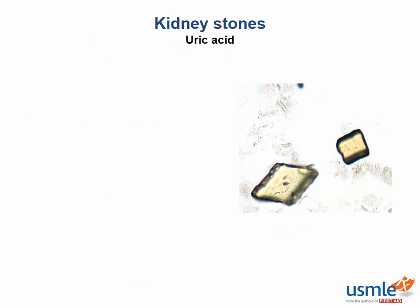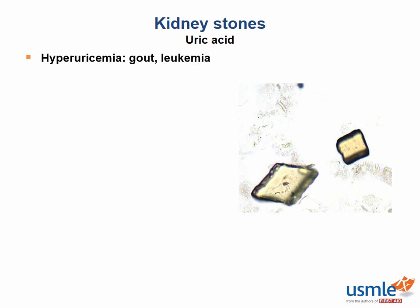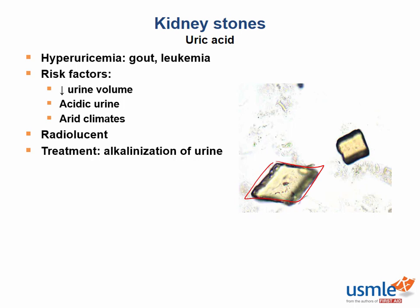Next up are uric acid stones. These occur in conditions that increase uric acid excretion, such as gout or leukemia. In leukemia, there is increased cell turnover and downstream uric acid production secondary to purine metabolism. Risk factors include anything that decreases urine volume and makes the urine more acidic, such as an arid climate. These stones are special because they are radiolucent, meaning they can't be seen on x-ray; however, they can be seen on ultrasound or CT. On microscopy, these stones appear rhomboid. You treat by alkalizing the urine or can consider using allopurinol.